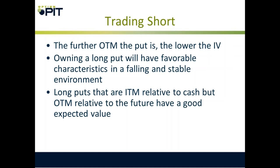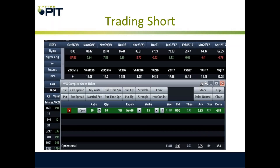Trading short VIX: the further out of the money the put is, the lower the volatility. Owning a long put will have favorable characteristics in a falling and stable environment. Long puts that are in the money relative to cash but out of the money relative to futures have a really good expected value. In this scenario, VIX is 14.5 and the VIX future is 15.50, so you can buy an option that is 45 cents in the money for 95 cents — that has edge to it, in my opinion. This trade lost, but it did have edge.